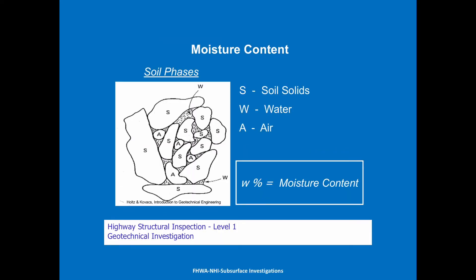What is moisture content? In the diagram, S's represent soil, bubbles with A's are air, and everything in between is water. We can weigh it, dry it, and weigh it again to get that moisture content — how much water is actually in the soil. Water is a good thing in soil but also a bad thing: too little and it won't act right, too much and it won't act right, but just enough and it'll do exactly what it's supposed to do and give you the compaction to do your work.